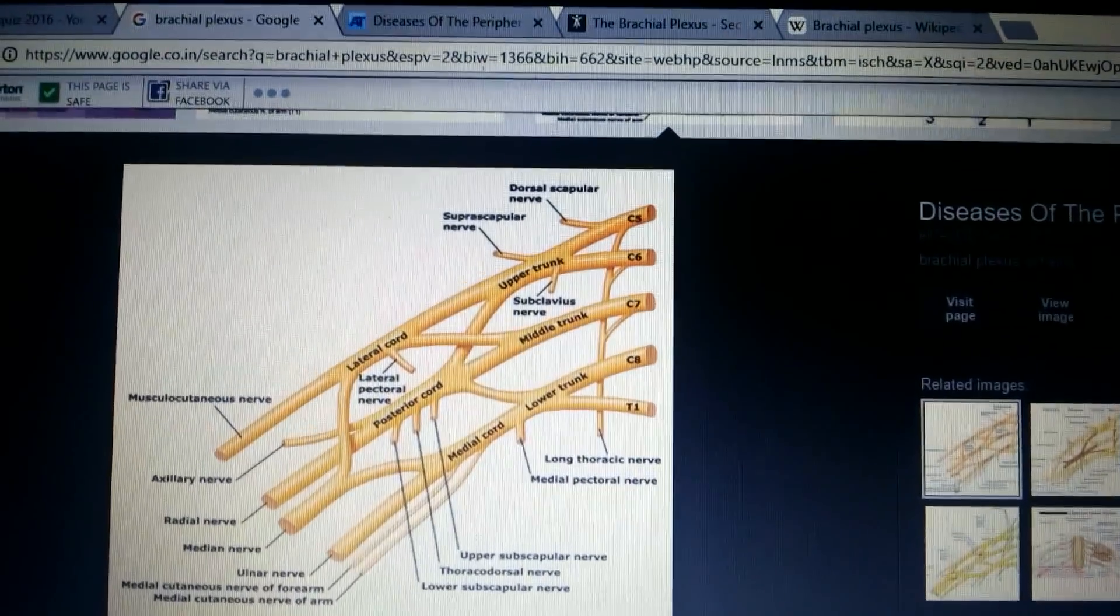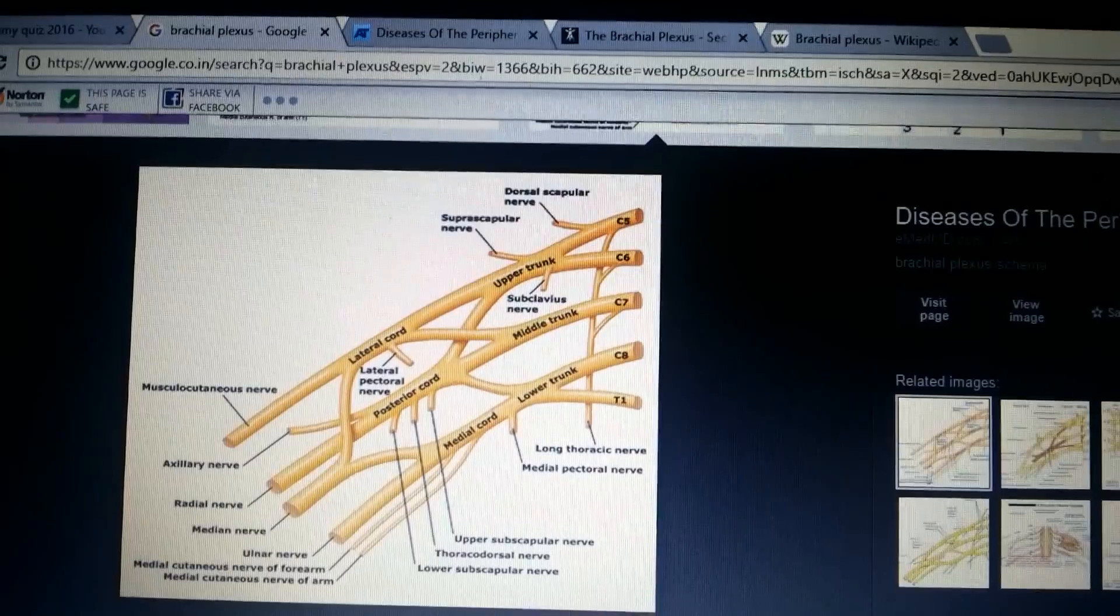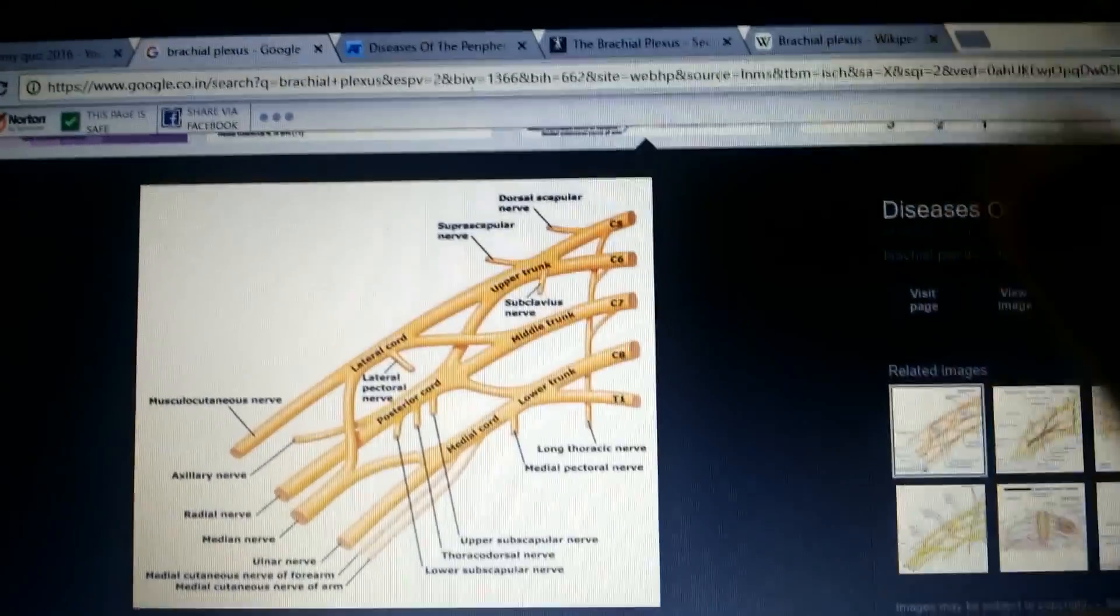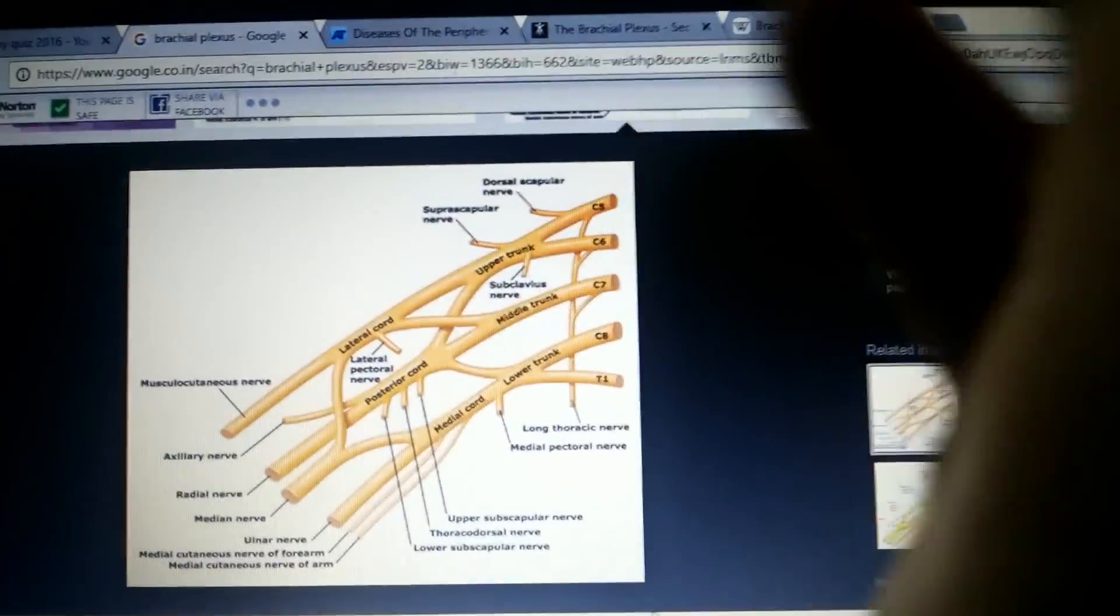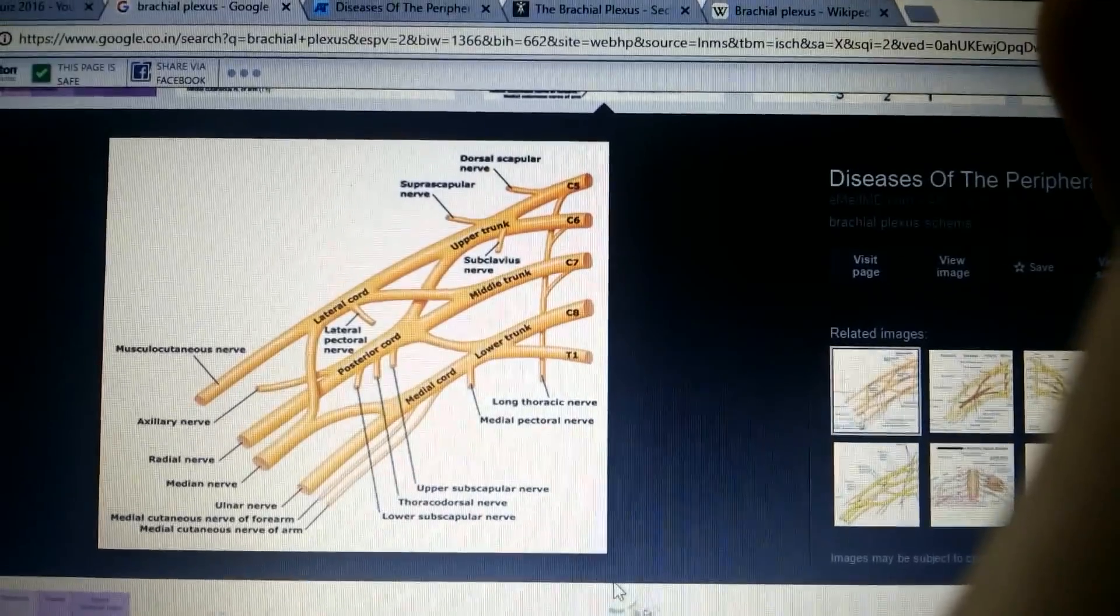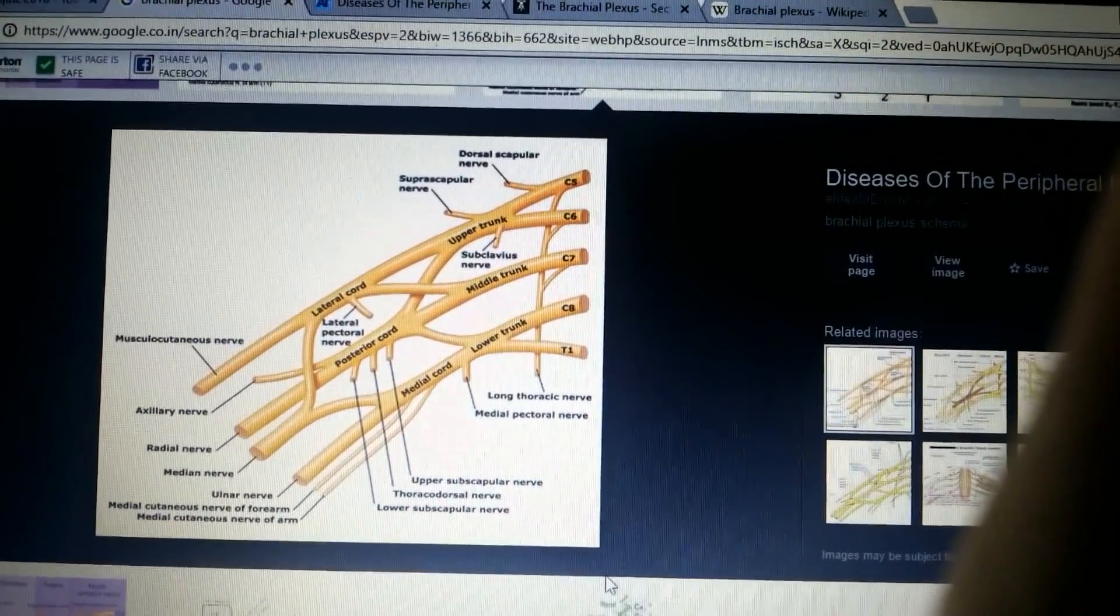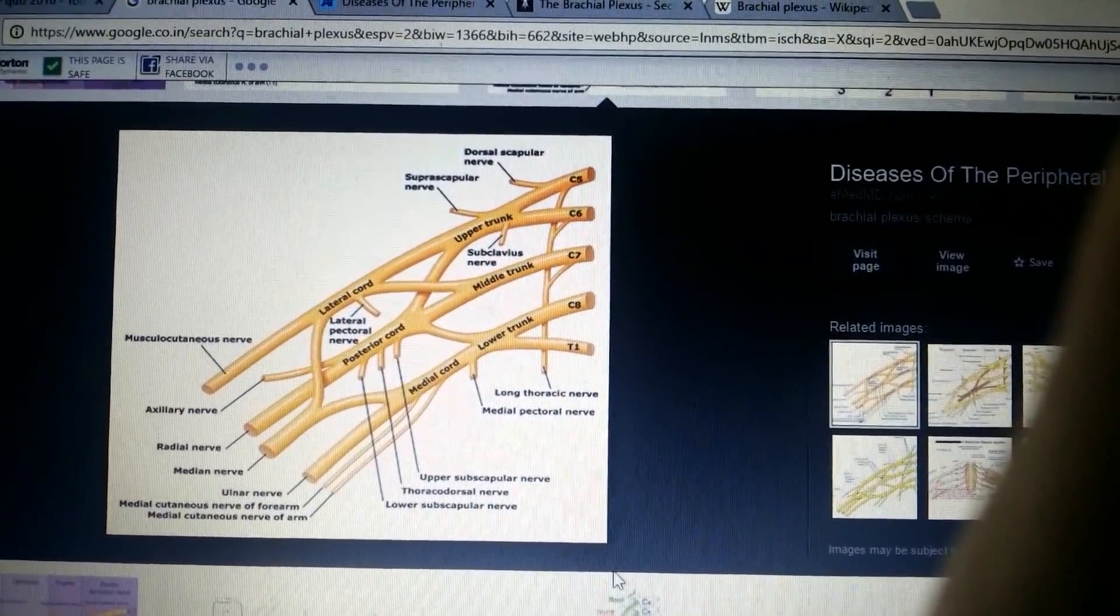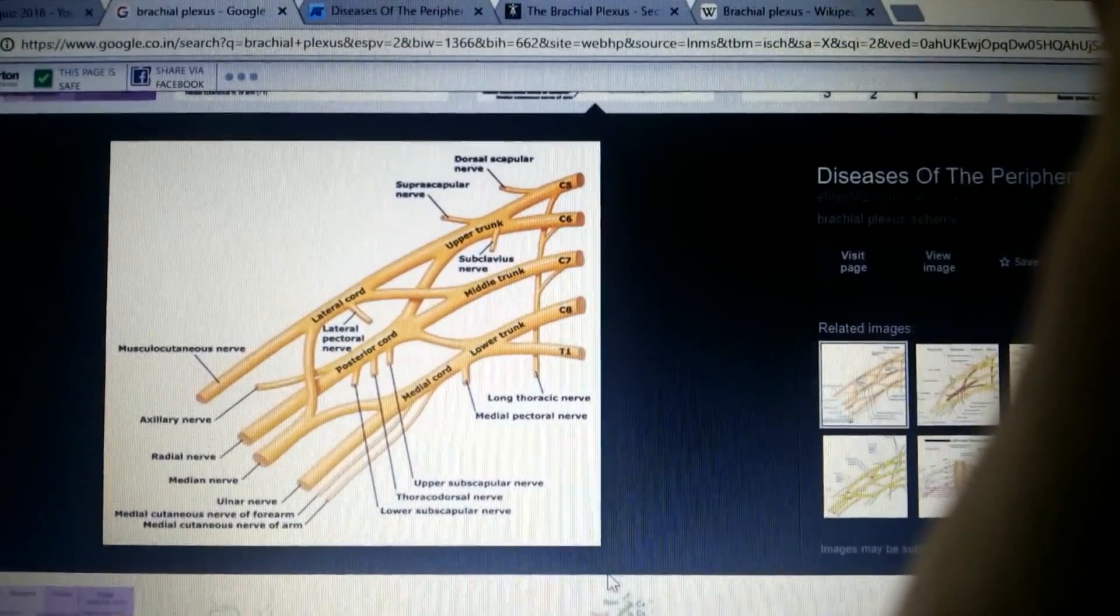The brachial plexus has C5, C6, C7, C8, and T1. C5 and C6 combine to form the upper trunk, C7 forms the middle trunk, whereas C8 and T1 form the lower trunk. From the C5 root we get dorsal scapular nerve.